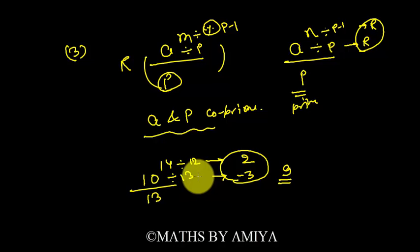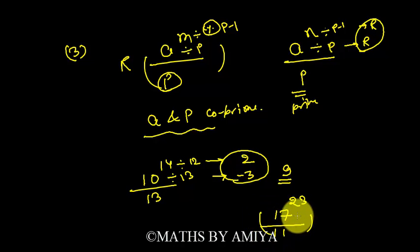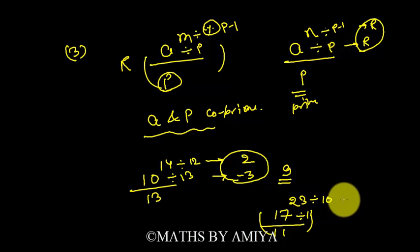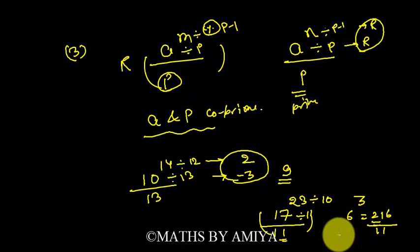For better understanding, another example: 17^23 divided by 11. First, 17 divided by 11: remainder is 3. Power: 23 divided by 10 (p minus one): remainder is 6. Wait — remainder of 23 ÷ 10 is 3, and 17 mod 11 is 6. So 6^3 = 216. Since 216 is more than 11, divide 216 by 11: the remainder is 7.